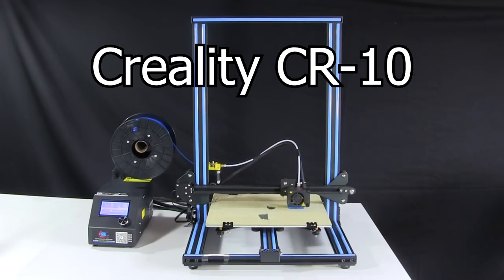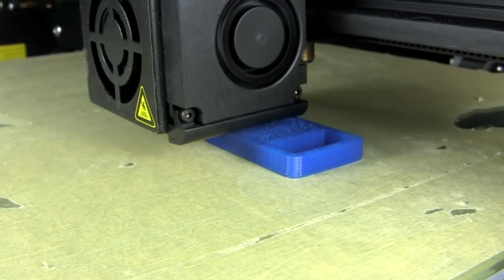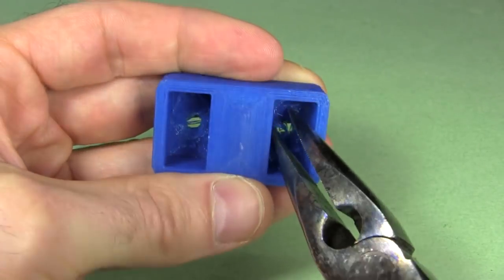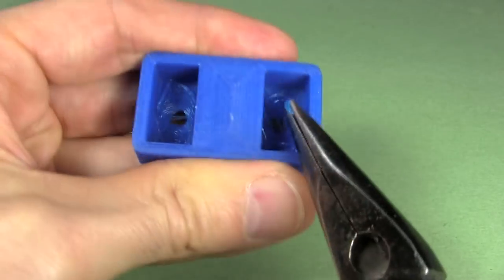I printed it using my Creality CR10 3D printer in this orientation. Once printed, I cleaned up the inside so that the magnets would sit flush.